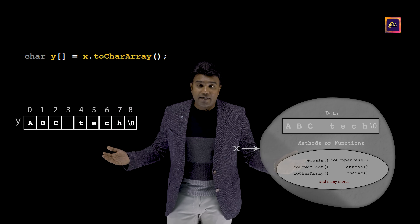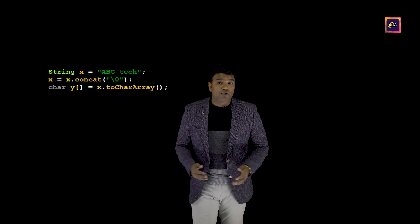Now let's go ahead and write the complete program. I begin by creating a string ABC-tech. In Java, I would not store it in an array of characters; rather I would be treating it as a string object. At the end of this data, we wouldn't be having a null, so it is my responsibility to attach a null at the end of ABC-tech, which can be done like this. I would also extract a copy of this data into a character array called y using the toCharArray method. Now that my data is in the character array y, it is certainly easy for me to compute the length.